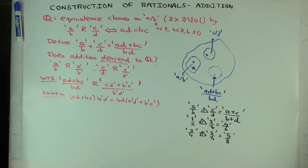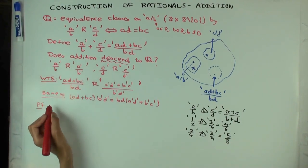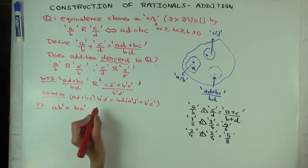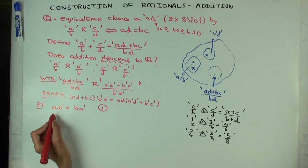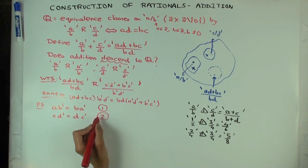How will you show this? Well, we know that a over b R a prime over b prime. So what does that tell us? ab prime equals ba prime. Let's call this one. We also know that cd prime equals dc prime. Two.